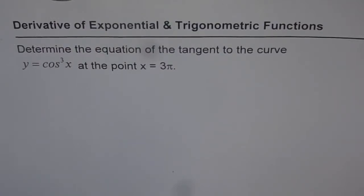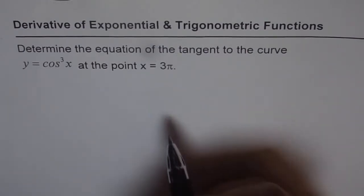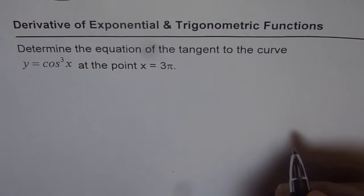Derivative of exponential and trigonometric functions. Determine the equation of the tangent to the curve y = cos³x at the point x = 3π. Here we are given the x coordinate of the point. Let us find the y coordinate also.